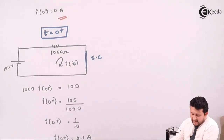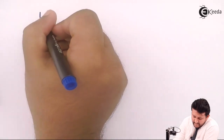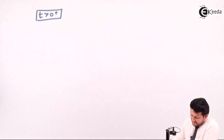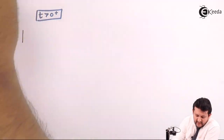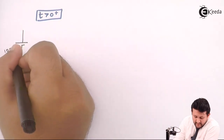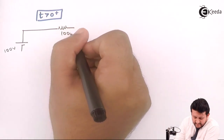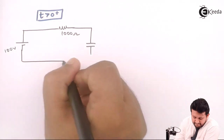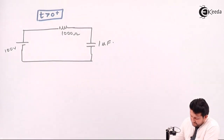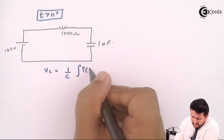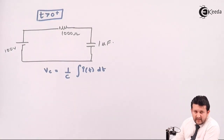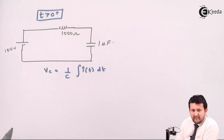Now let's go to the third case when T is greater than 0 plus. We draw the circuit as it is — no parameters need to be shorted or opened. The circuit is 100 volts with a resistance and a 1 microfarad capacitor. Before solving, recall the formula for voltage across a capacitor: V = (1/C) × ∫i(t)dt. This is analogous to the inductor formula L×di/dt.